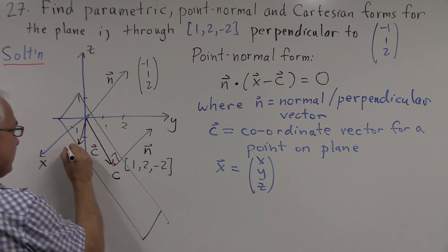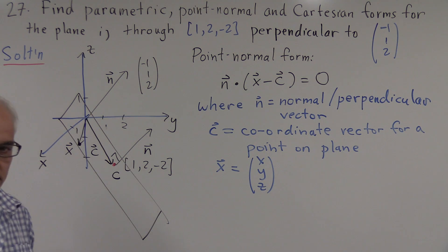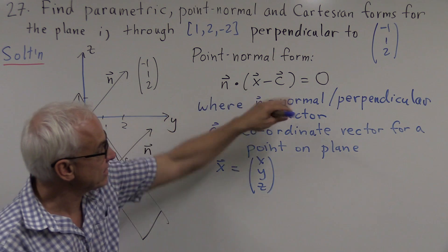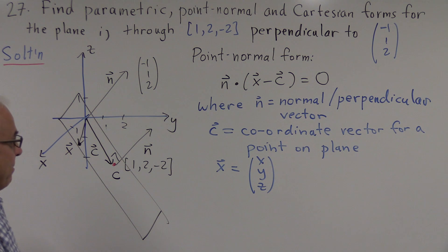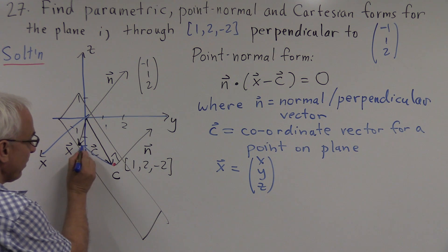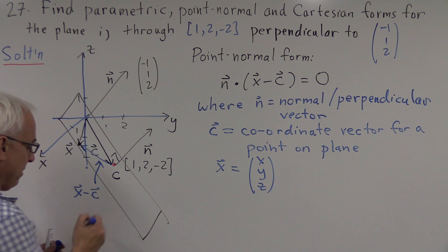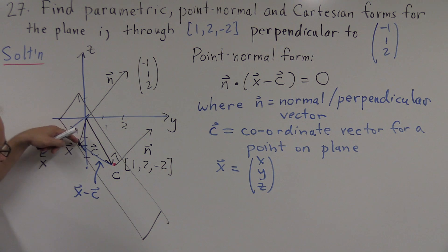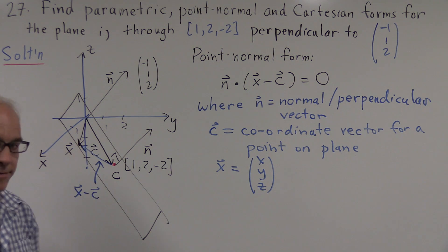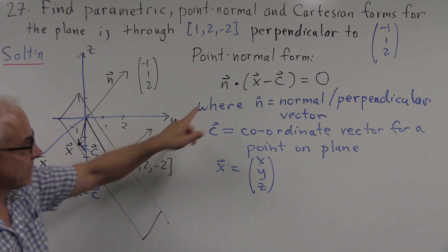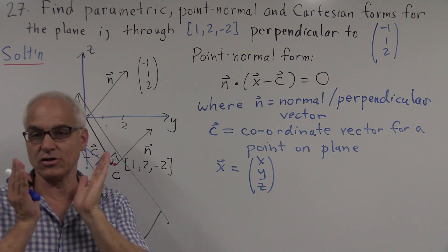So what this vector equation is telling us is that if you take the difference between x and c, so x minus c, well that's going to be this vector right here. So that is x minus c, because it's the coordinate vector of x minus the coordinate vector of c, so it's the vector going from this point to this point.